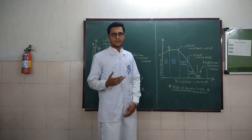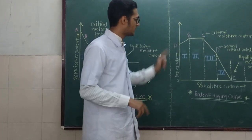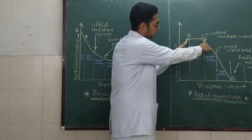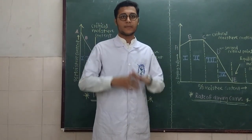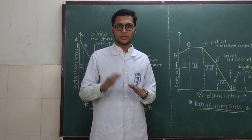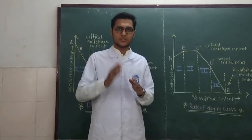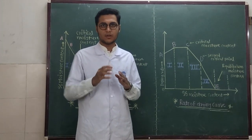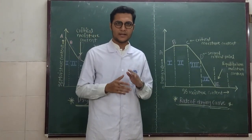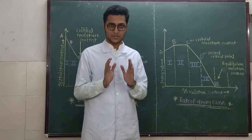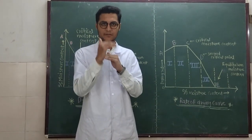The next phase is the constant rate period. As you can see in the graph, segment BC shows the constant rate period. In this phase, there is constant formation of a liquid film on the surface of the solid, because of constant evaporation of the moisture present in the solid. This process continues until sufficient moisture is present to replace the film on the surface.